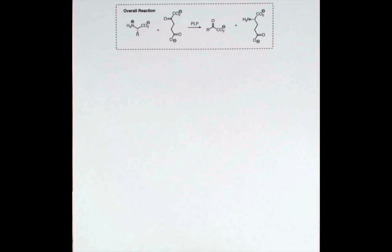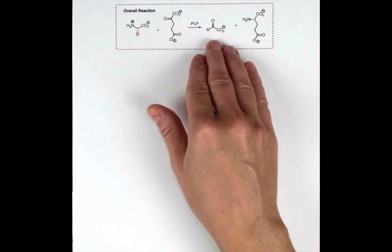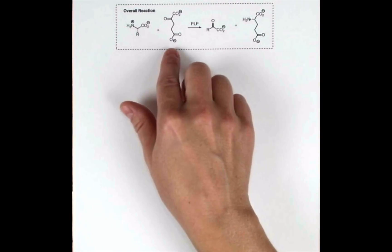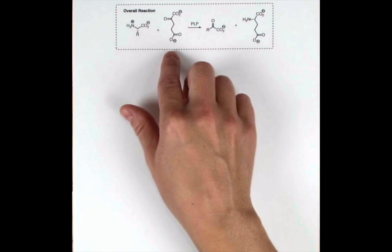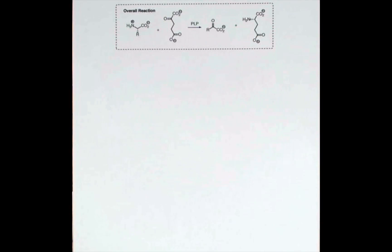When we left off in the last video, we showed how this generic amino acid could be converted to this ketone using PLP. However, we hadn't gotten to the point where we were converting alpha-ketoglutarate into the amine. So we're going to pick up there. We have PLP in its PMP state as the amine, and we're going to call this stage four of our reaction.